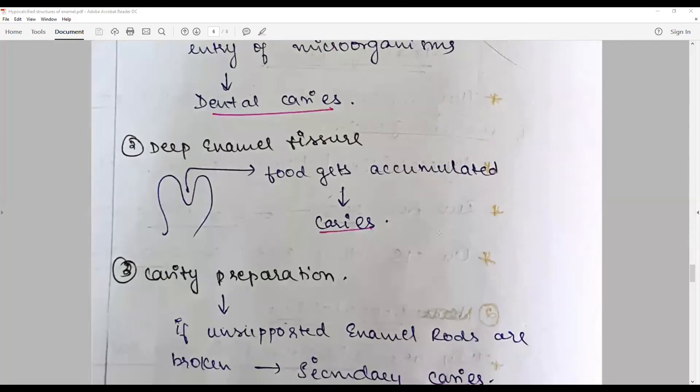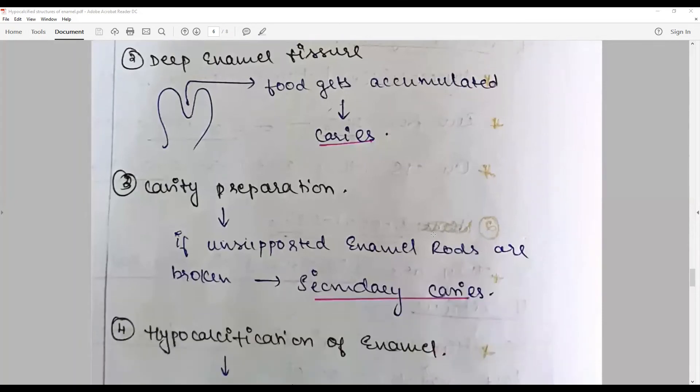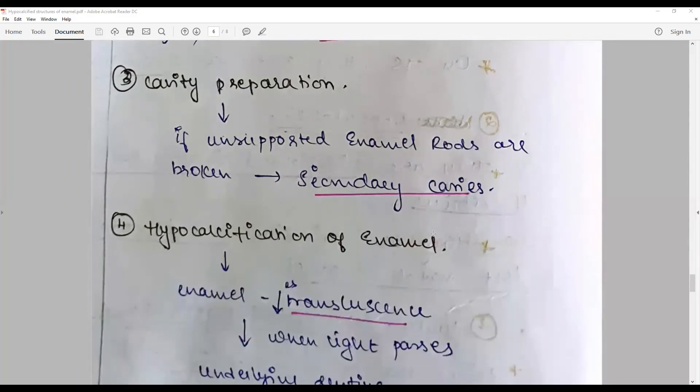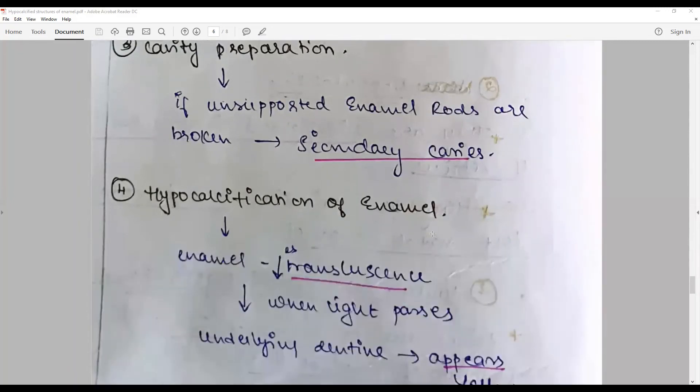The direction of enamel rods helps us to plan for the cavity base. Unsupported enamel rods need to be removed, otherwise they will cause secondary caries. Hypocalcification of enamel may lead to a very yellowish tooth.